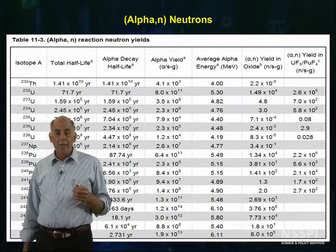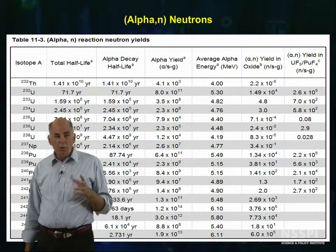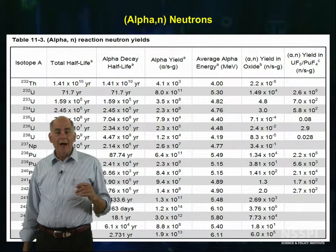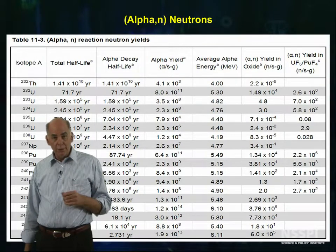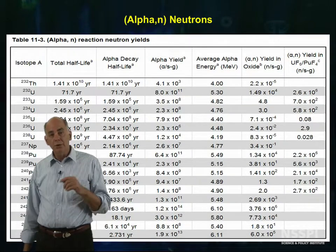The range of these alpha particles in most actinide matrices is to the order of a few tens of micrometers. Some of these alphas can interact with the nucleus of the neighboring actinides in the matrix and produce neutrons.